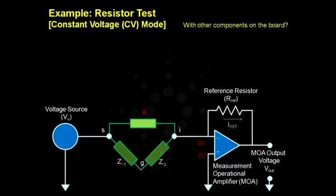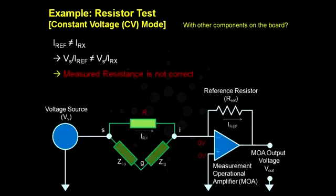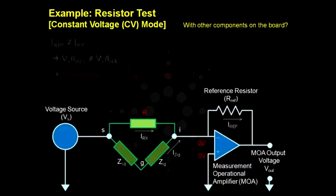Because of this parallel path, I-ref becomes a combination of current flowing through the DUT and the parallel path represented by I-Rx and I-Zig in the diagram. This results in an error in the calculated value of the resistor.